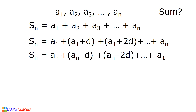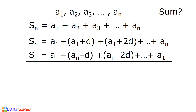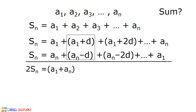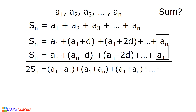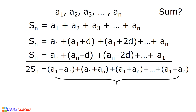We now have these two equations and we have to add them to determine our formula. S sub n plus S sub n is equal to 2 S sub n. A sub 1 plus A sub n equals A sub 1 plus A sub n. A sub 1 plus d plus A sub n minus d equals A sub 1 plus A sub n. A sub 1 plus 2d plus A sub n minus 2d also equals A sub 1 plus A sub n, all the way to A sub n plus A sub 1. In the right side of our equation, we have n number of terms in the form of a sub 1 plus a sub n, which we can write as n times the quantity a sub 1 plus a sub n.